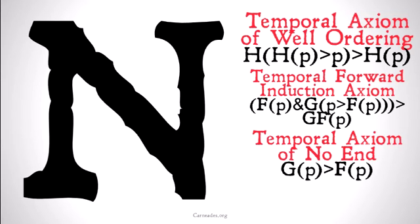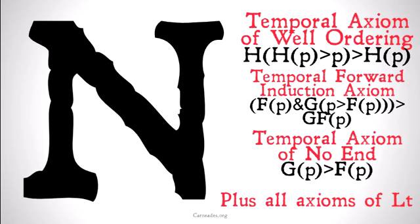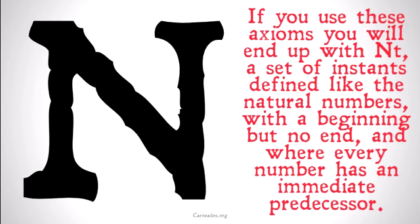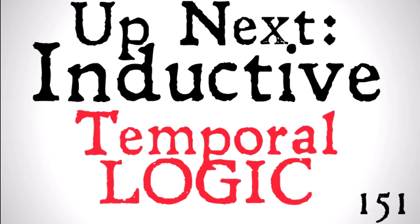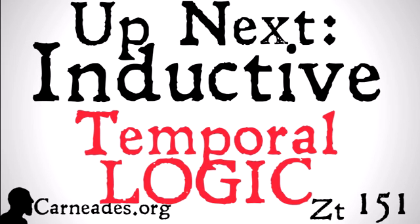Those are the three axioms: the temporal axiom of well-ordering, the temporal forward induction axiom, and the temporal axiom of no end — plus all the axioms of LT. If you use these axioms, you will end up with NT, a set of instants defined like the natural numbers, with a beginning but no end, where every number has an immediate predecessor, and where the numbers are well-ordered such that any subset of all the numbers will have a least member. Next up we're going to be looking at inductive temporal logic, also known as ZT. Watch this video and more here at Carneades.org — a new video every single day for three months with the three months of modal logic. Stay skeptical, everybody.